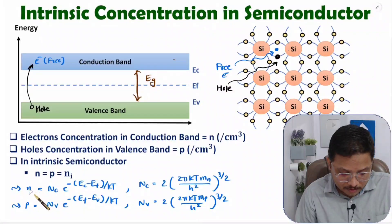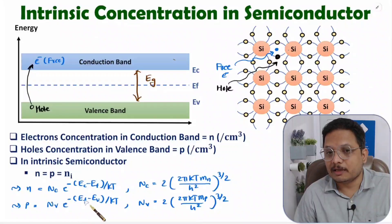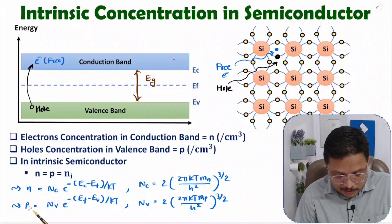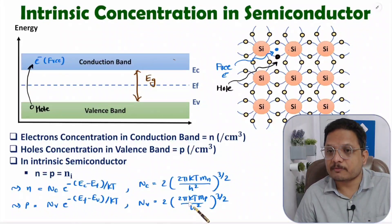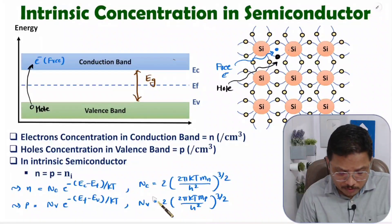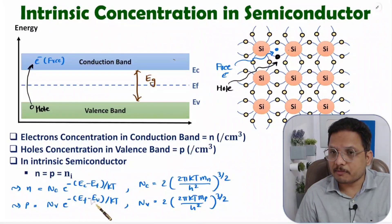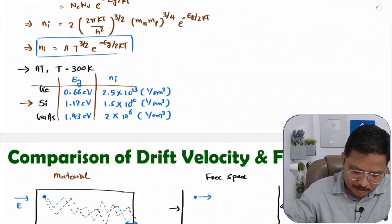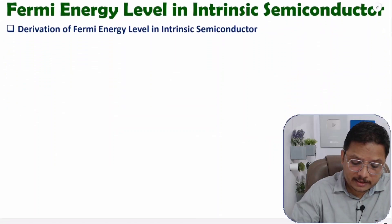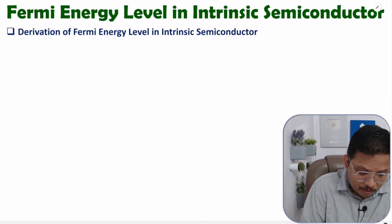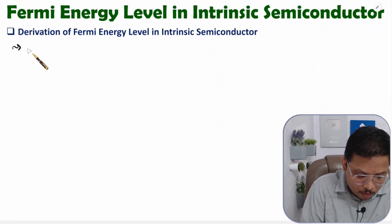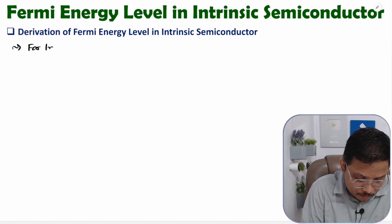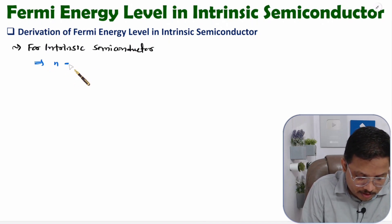We have seen those equations: concentration of electrons N in the conduction band, and concentration of holes, we have seen by these equations. So now, by using this, I will derive the Fermi energy level. For intrinsic semiconductor material, electron concentration equals hole concentration. So concentration of electrons in the conduction band equals concentration of holes in the valence band.